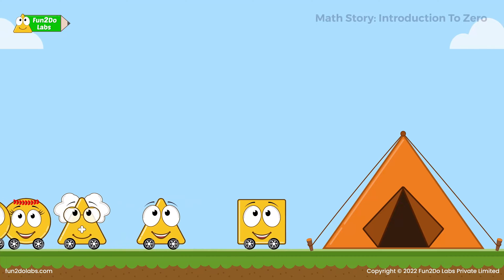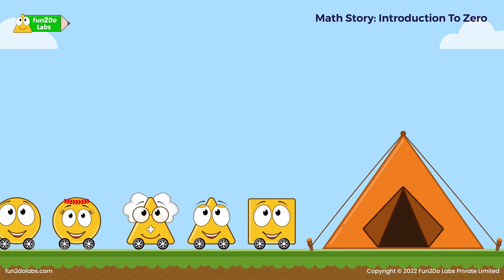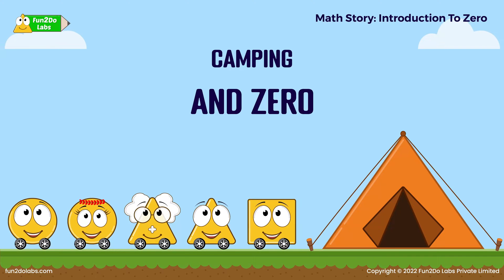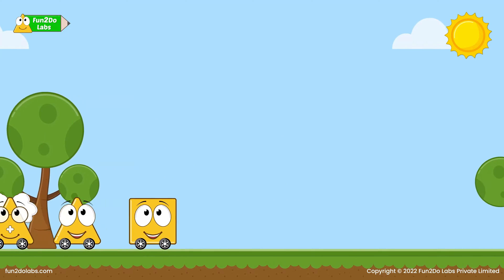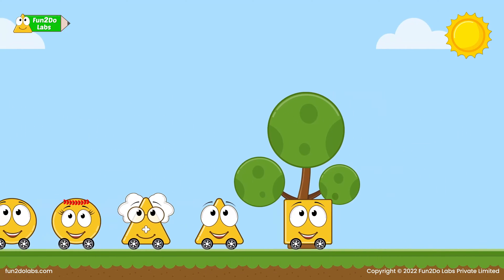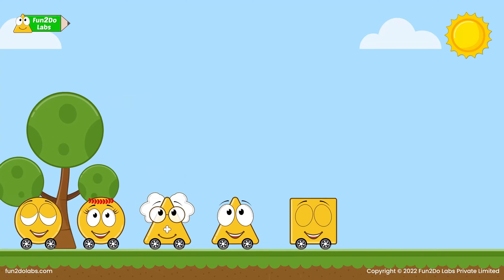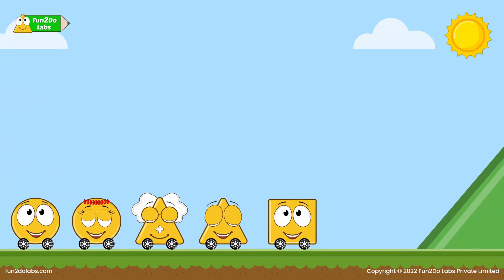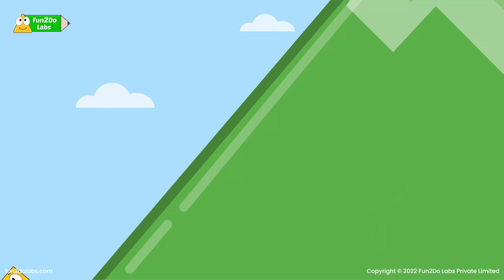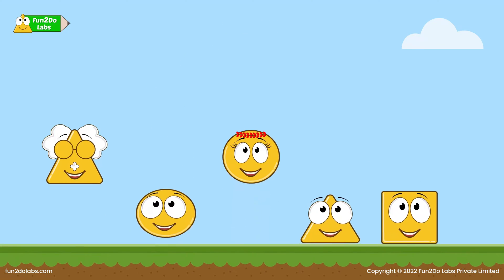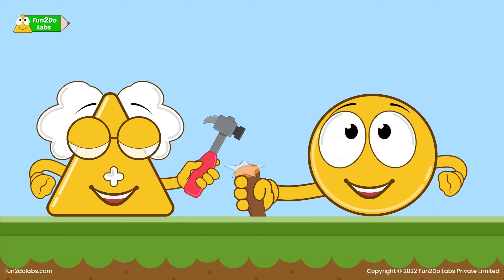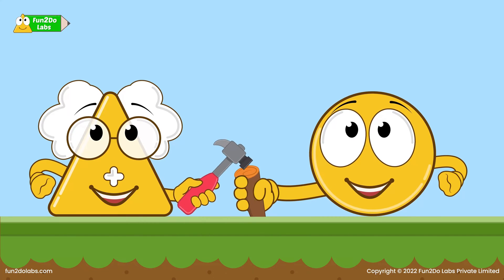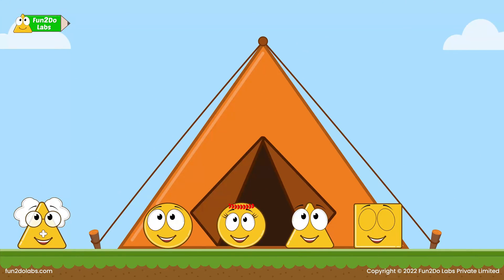Introduction to zero: it is a camping day! Uncle Math and the kids are going to a nearby hill to camp and have fun together. They hop, hop, and hop — finally they reach the hilltop. They decide to make a big tent that can accommodate all five of them.